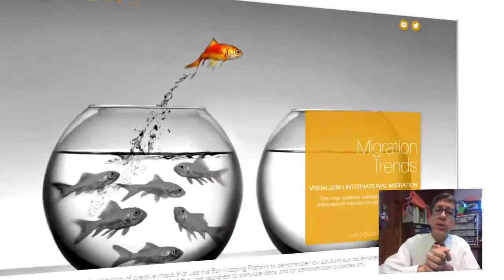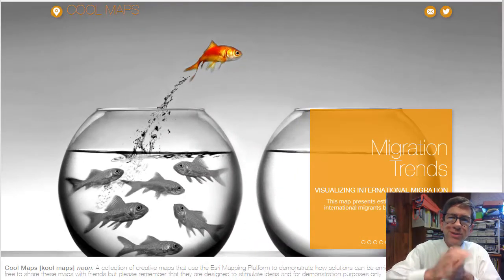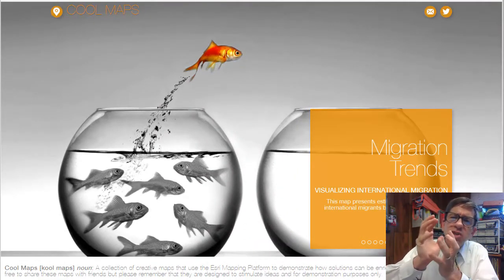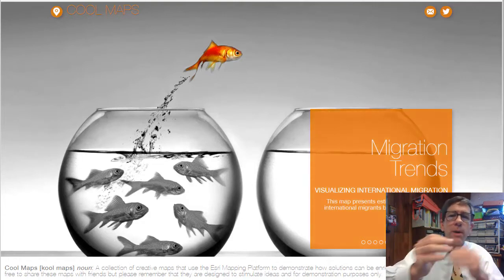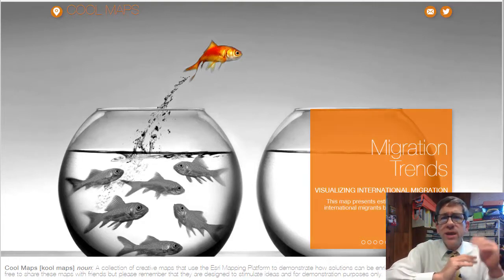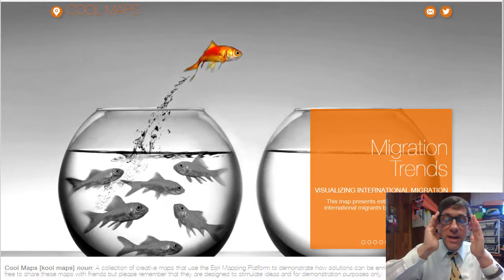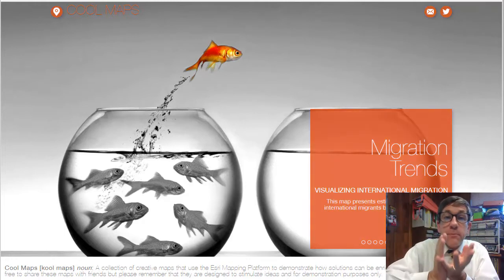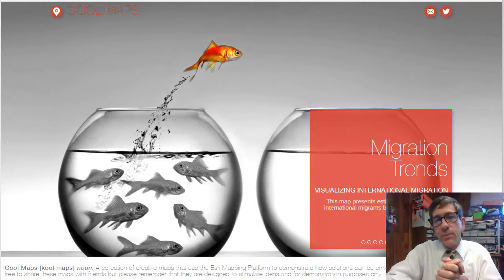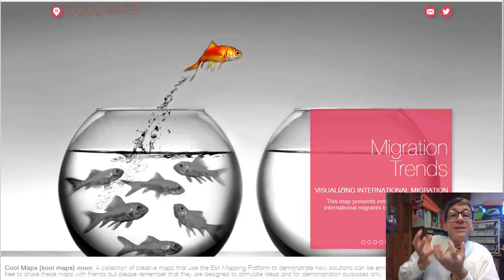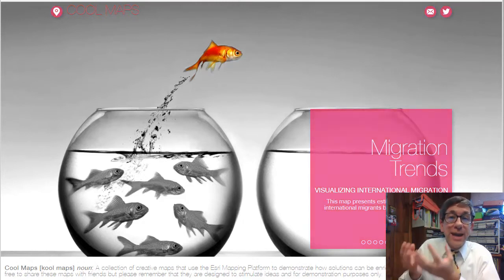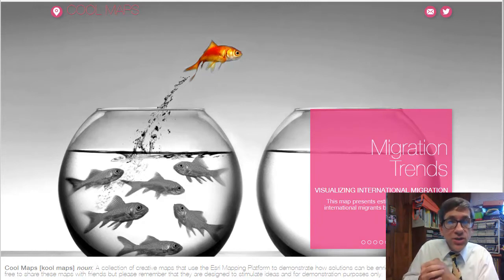There are many good resources to teach about migration, but since it's such a geographic, spatial concept — involving to, from, flows, physical and cultural boundaries, identity, and so on — maps are one of the best resources. And what better than dynamic web maps that actually show migration patterns, trends, and issues?